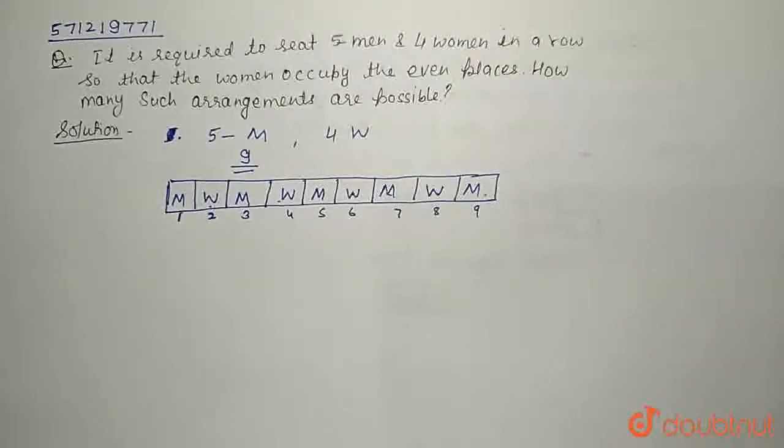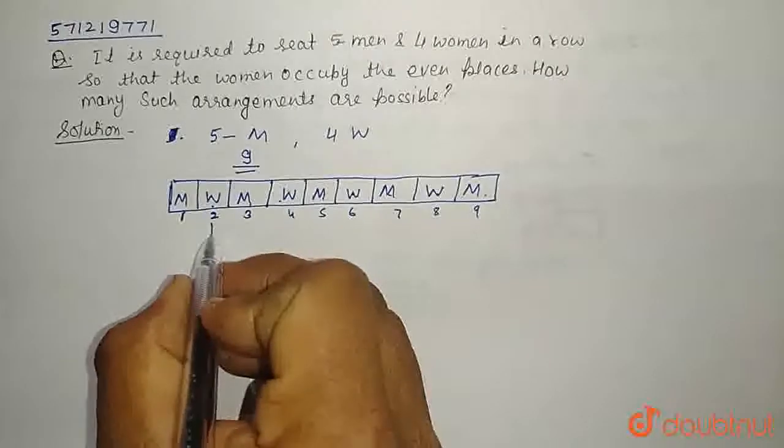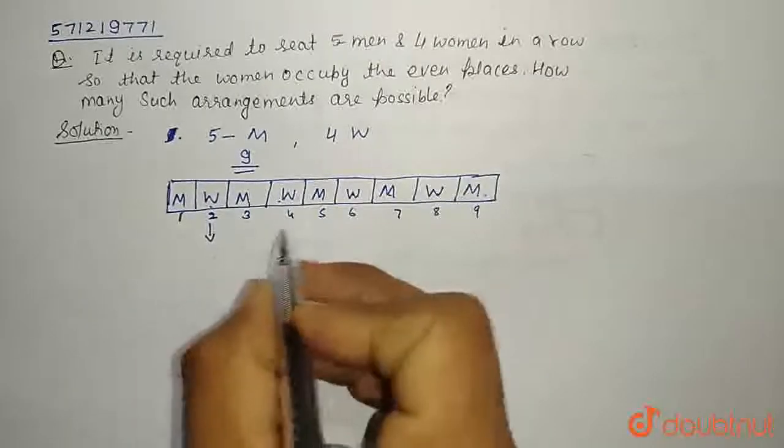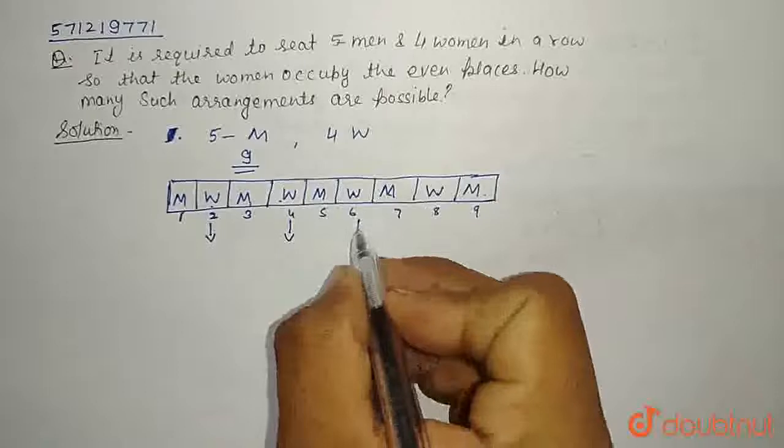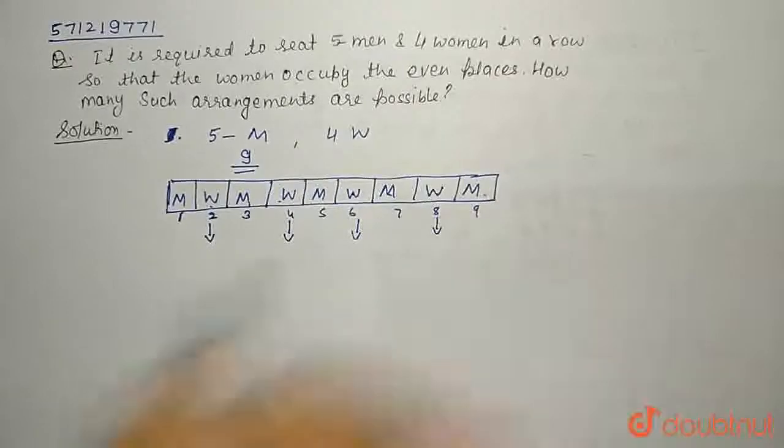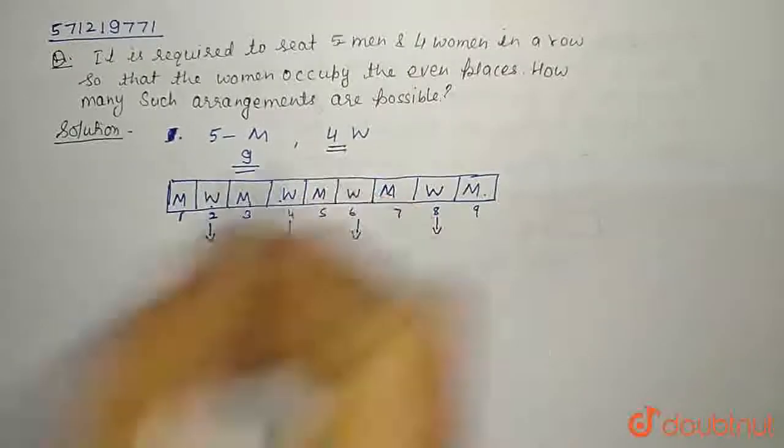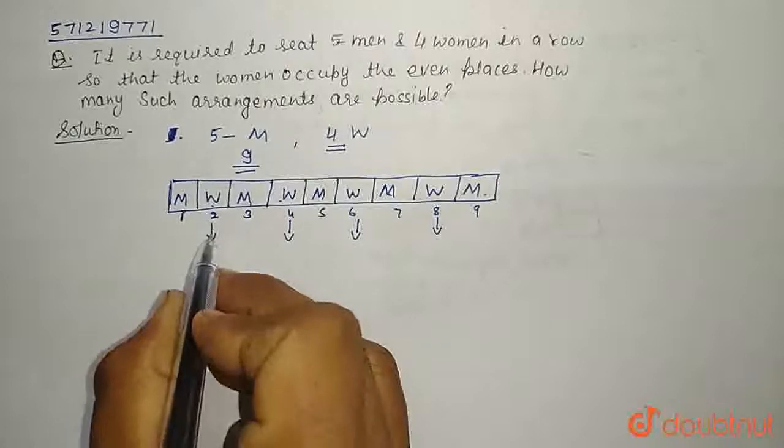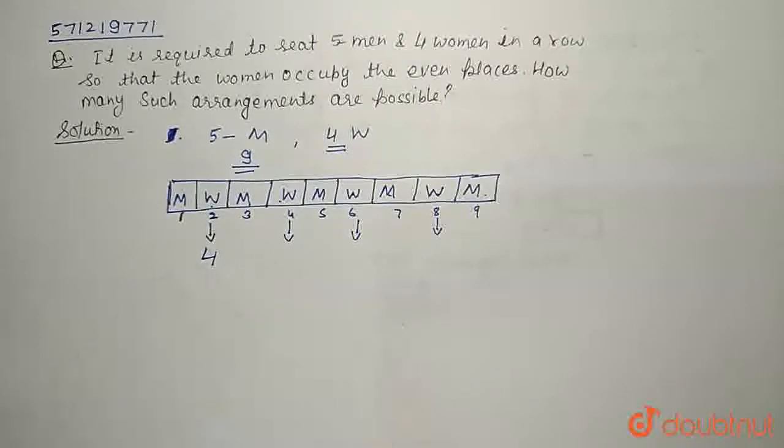Now we will first arrange women. So that means we need to arrange 2nd position, 4th position, 6th position and 8th position. We have total 4 women. So the 2nd place can be filled with 4 total possibilities.